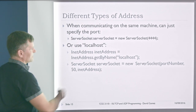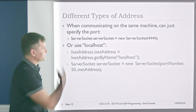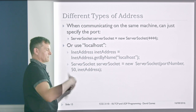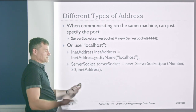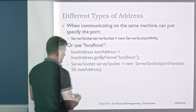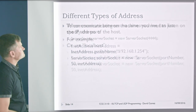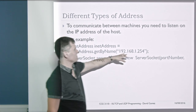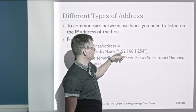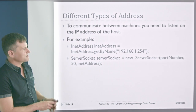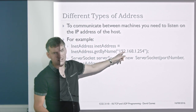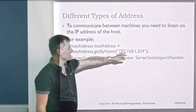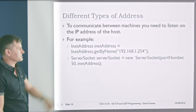If we want to communicate between computers, the server needs to listen on the IP address of that computer. If we want to communicate between separate programs running on the same computer, we can just use localhost or omit that entirely. To communicate between machines, you listen on the IP address — for example, 192.168.1.254. If we listen on that address, then any other program on the same local area network, ignoring firewall problems, can communicate with that program listening on that port.